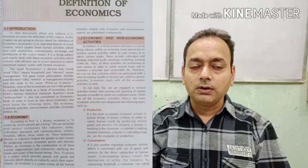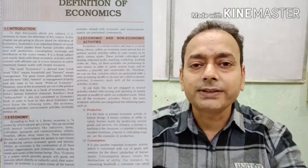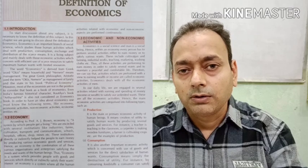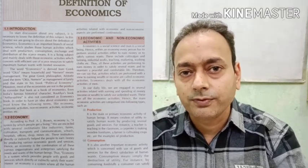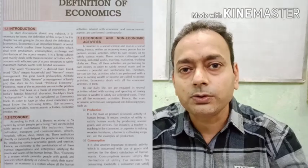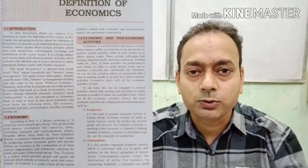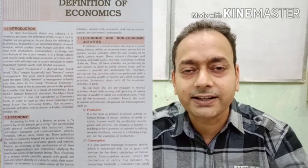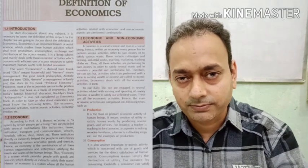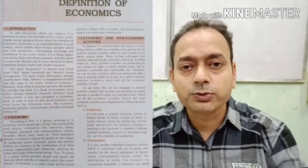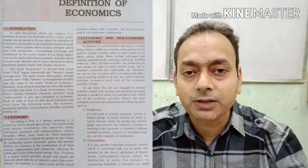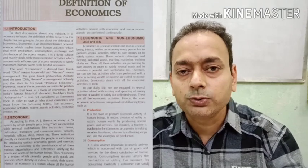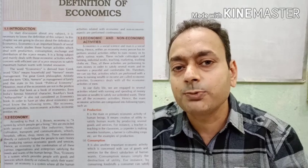Second is distribution. After production, distribution is also an important economic activity. In this activity, all the produced goods are moved from one location to another location. We can transport them from one location to another. We call this distribution. The produced goods reach the market through the combined activities of traders and transporters.